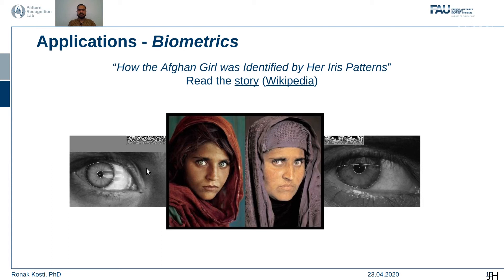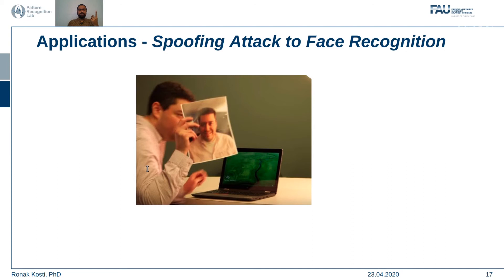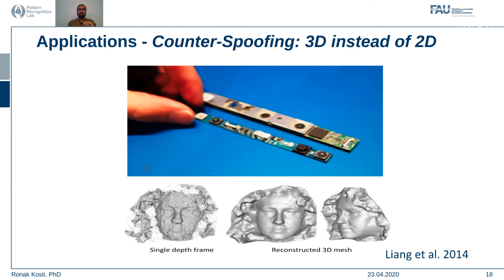Login without passwords has also become very common — for example, laptops use fingerprint sensors or face recognition, and phones use your face to unlock the screen. However, there are issues with face IDs: you can spoof the system by showing a photograph of the person, causing the device to unlock — a major security flaw. We can counter-spoof these attacks by using 3D information instead of just a 2D image.